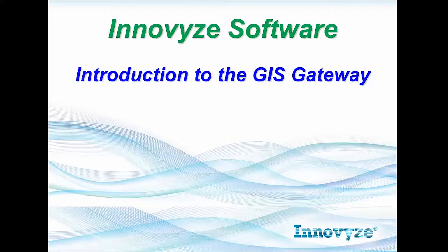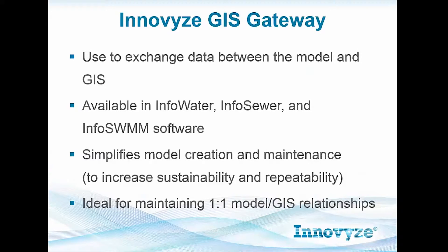Welcome to this Innovise software video. We are going to be introducing the GIS Gateway and demonstrate some of its current features and abilities. The GIS Gateway is something that Innovise software allows you to exchange data between the model and the GIS. This is available in InfoWater, InfoSewer, as well as InfoSwim software.